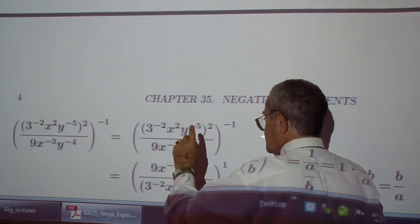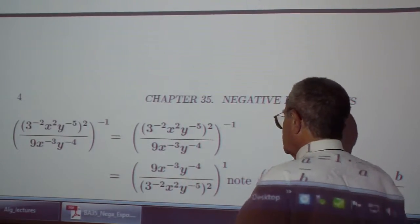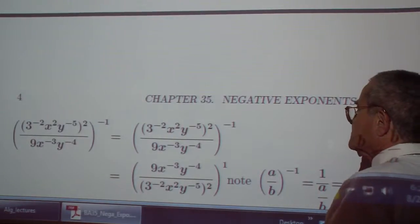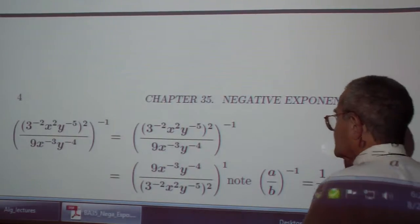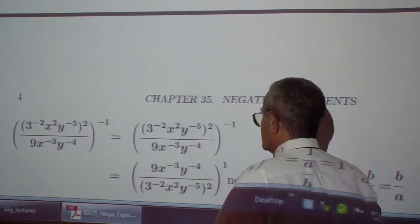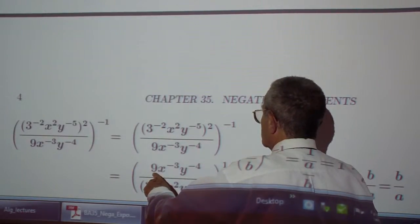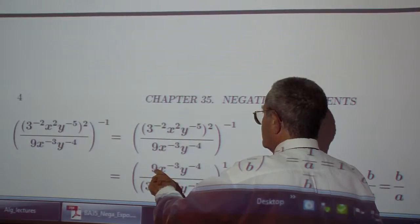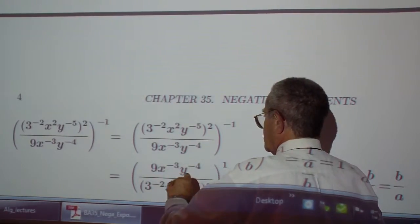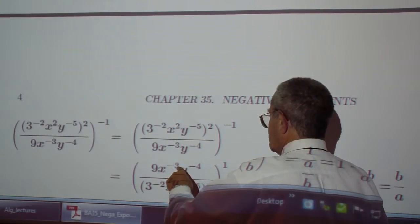Something bothers me here. OK, OK, the exponent is positive 2. This exponent should be negative 2.